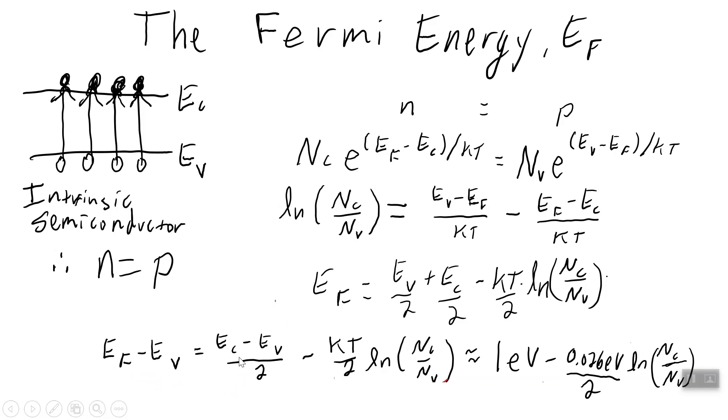And so we have an expression for how far the Fermi energy is from the valence energy. As a function of E conduction minus E valence, which by the way is the band gap, minus KT over two log of NC over NV are known in terms of densities of states that we can look up. Typical band gap is one or two electron volts. So I'm going to look at an order of magnitude here. So this first term here is on the order of one electron volt. This next term KT is 0.026 and then you go and divide it by two. So 0.013.